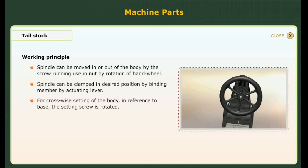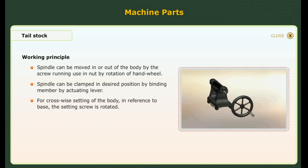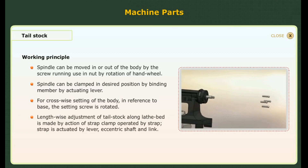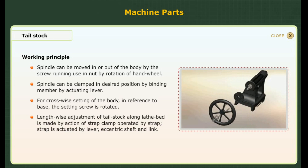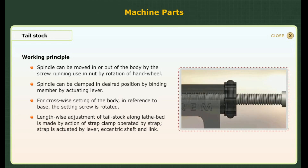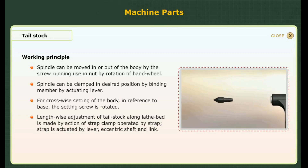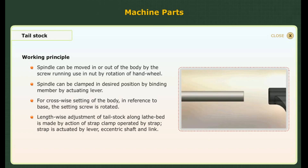For crosswise setting of the body in reference to the base, the setting screw is rotated. Lengthwise adjustment of the tail stock along the lathe bed is made by the action of a strap clamp operated by the strap. The strap is actuated by the lever, eccentric shaft, and link.